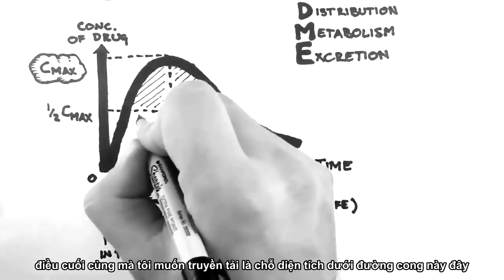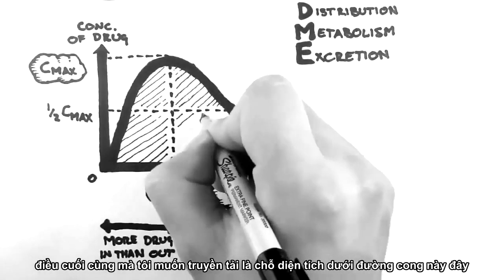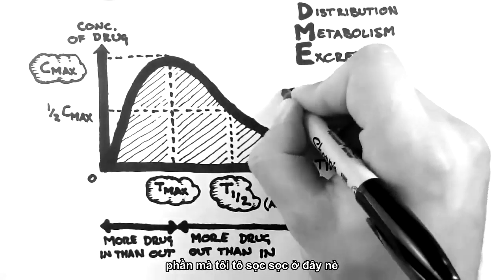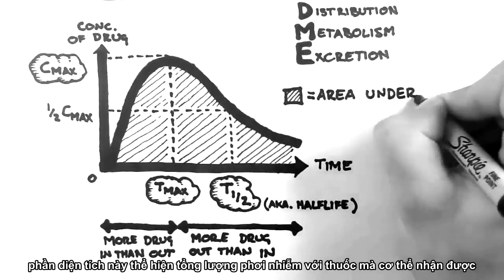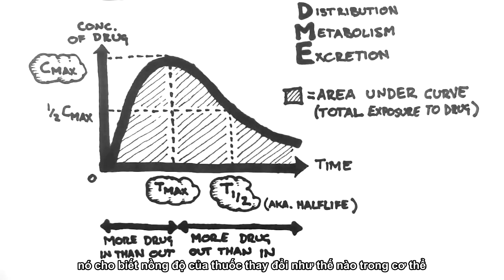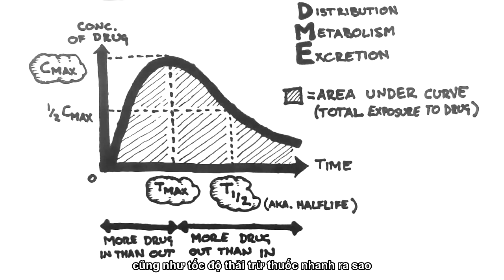The last thing to look at is the area under the curve, and this I have illustrated by shading in the space under the graph. This represents the total exposure to a drug that the body receives. This is a function of how high the concentration of the drug gets, as well as how quickly it's excreted.